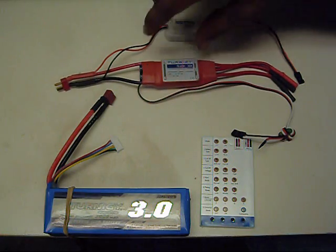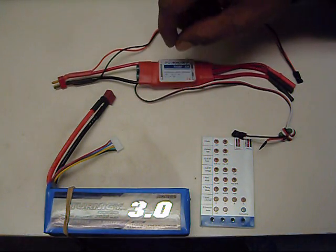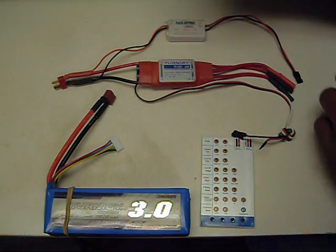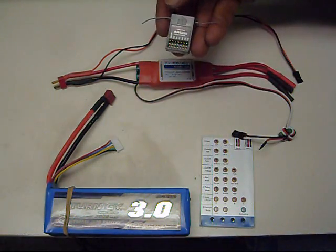So the speed controller, now this speed controller has a built-in BEC, battery elimination circuit. Now what that's used for, that is used to provide power to the receiver.